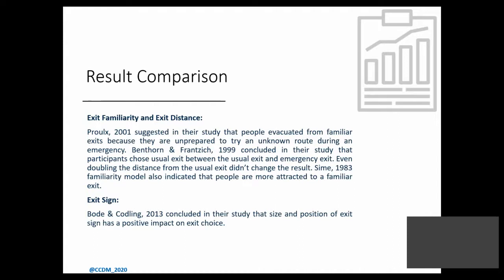Arc elasticity of a factor represents the change in probability of exit choice when a factor changes by a unit value, helping ascertain the relative importance of factors. Familiarity, exit signs, and physical activity came out to be the most influential factors in Scenarios 1, 2, and 3 respectively. An experiment conducted in a warehouse setting by Ben Thorn and Franzick revealed that exit familiarity was valued at least twice as much as distance from the exit by participants, similar to our findings. Bode and Kotlin suggested that exit signage had a positive impact on exit choice, confirmed by our study. The results are expected to vary as the layout of the virtual environment changes — which is one of the strengths of this technique, as numerous virtual settings can be tested.